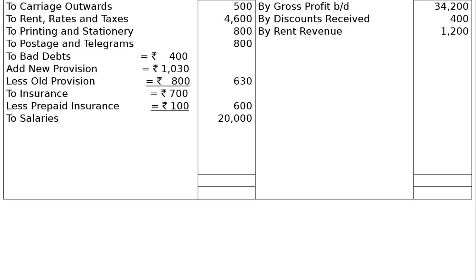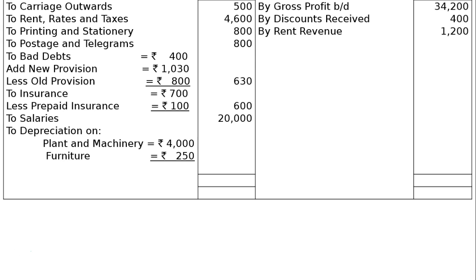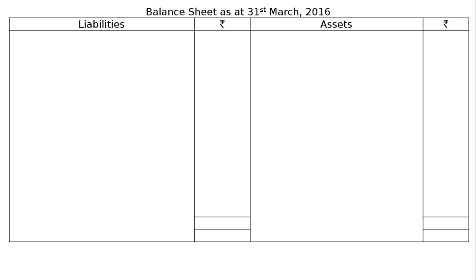Salaries on the debit side are rupees 20,000. We also charge depreciation as per adjustment E: on plant and machinery at 10% on rupees 40,000 that is rupees 4,000, and on furniture at 5% on rupees 5,000 that is rupees 250 — total depreciation rupees 4,250. The credit side total is rupees 35,800, and the net profit carried down is rupees 3,620.